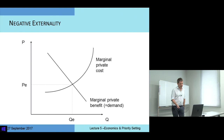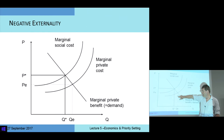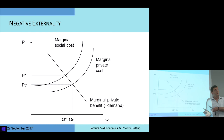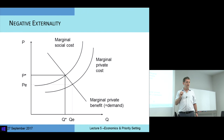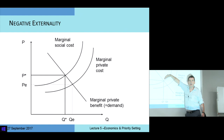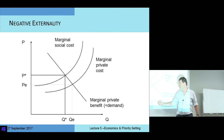Negative externality: same idea, the opposite direction. What's happening is the producer is thinking of their private costs. We have a decision to produce at QE, but perhaps there are also costs imposed on other people — an example being air pollution — in which case the marginal social cost is not equal to the private marginal cost; it's higher somewhere. So if the producer were to take into account their impact on society, we would expect them to produce less.